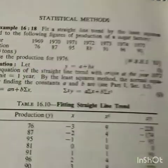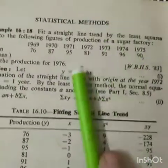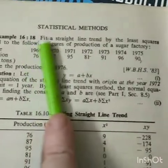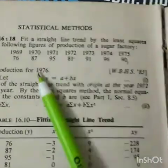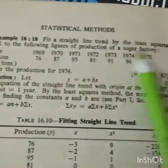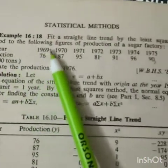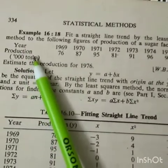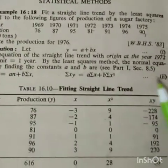Today I am going to explain a simple problem of time series. It is given: fit a straight line trend by the least squares method to the following figures. Years are given, productions are given, and we have to fit a straight line trend.